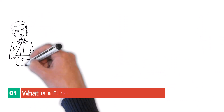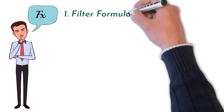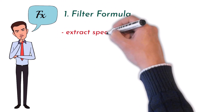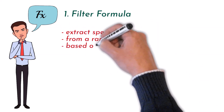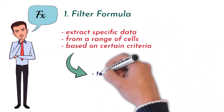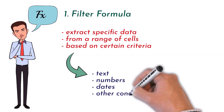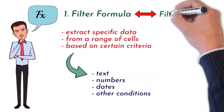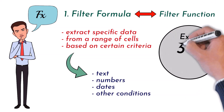So first, what is a filter formula? The filter formula is a function that allows you to extract specific data from a range of cells based on certain criteria. These criteria can be based on text, numbers, dates, or other conditions. The filter formula is also known as the filter function, and it was introduced in Excel 365.